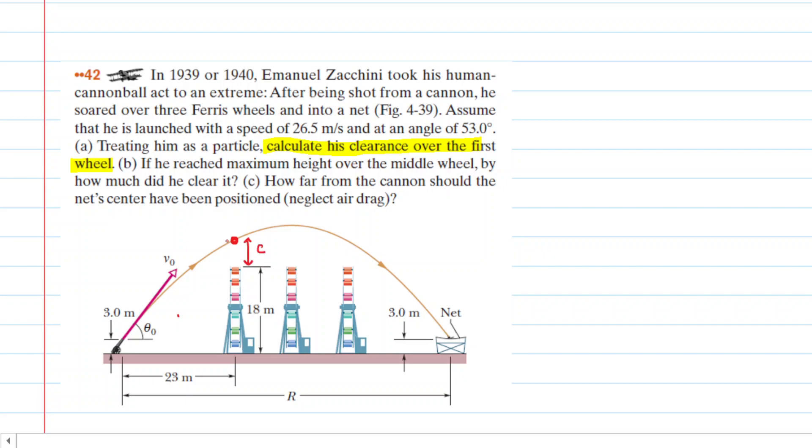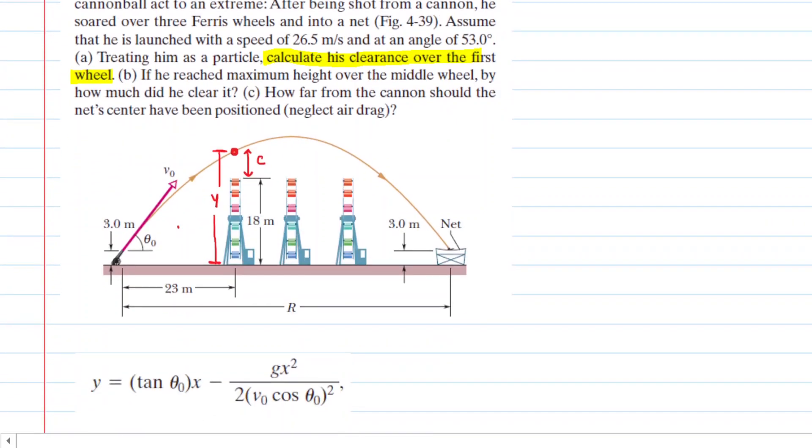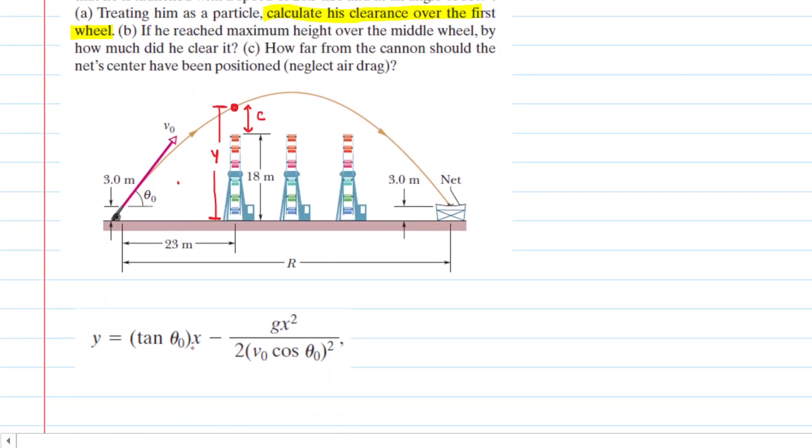But before we can get the clearance, we need to figure out what the acrobat's height is from ground level first. So we're going to call that Y. This question is a good example where we can use this equation in the textbook, known as the trajectory equation.